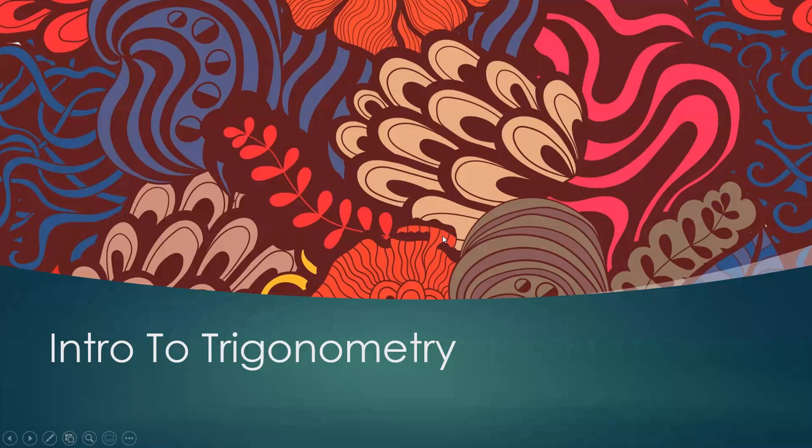Hi, welcome to the first lecture of this course. In this video, I will go over initial side, terminal side, vertex, and coterminal side. I will introduce the radian degree measure and how to convert radians to degrees and degrees to radians. I will also convert angle measure to decimal degrees and convert each angle measure to DMS, or degree minute seconds. Finally, I will finish up with a word problem involving arc length.